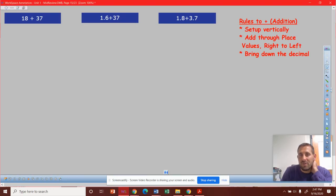All right, so here's the three addition problems that you had. We set up the rules over here. To solve these addition problems, we want to set the problem up vertically, we want to add through the place values right to left, and bring down the decimals.